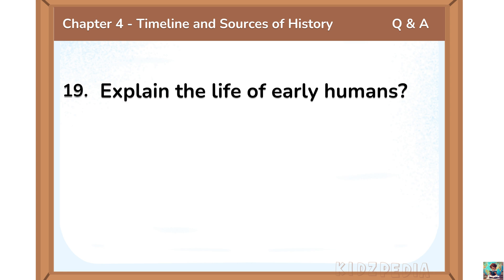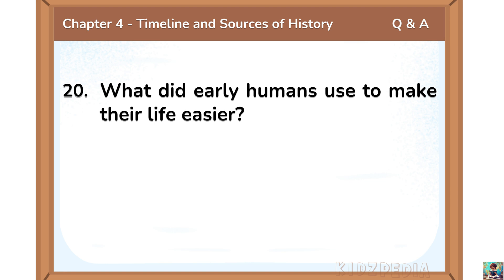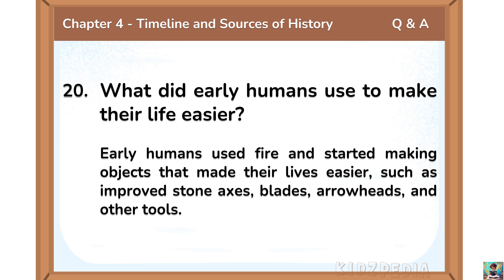Explain the life of early humans. Early humans faced many challenges from nature and lived in bands or groups to help each other. They were constantly seeking shelter and food and were mainly hunters and gatherers. Early humans used fire and started making objects that made their lives easier, such as improved stone axes, blades, arrowheads and other tools.